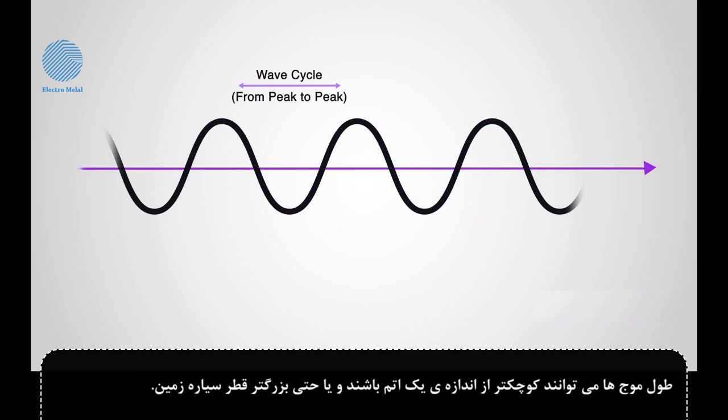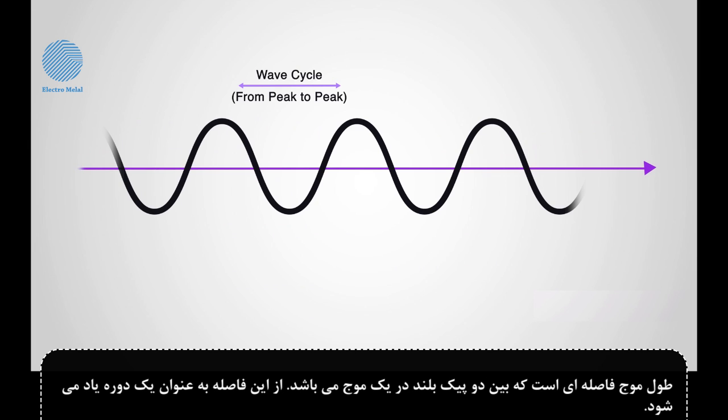Wavelength is the distance measured between the two highest peaks in a wave. This distance is referred to as a period. Wavelengths could be smaller than the size of an atom and longer than the diameter of the planet Earth.